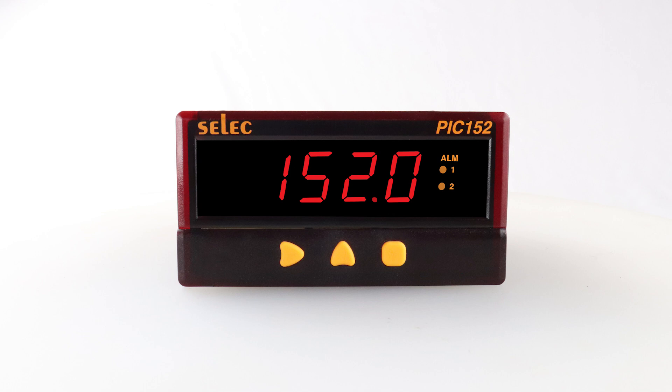The process indicator is used to indicate various process parameters such as temperature, pressure, flow, humidity, rate, etc.